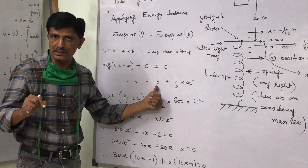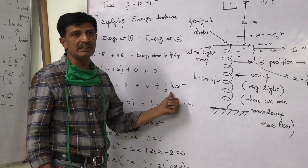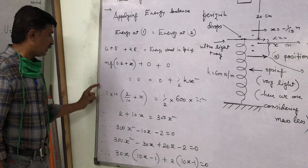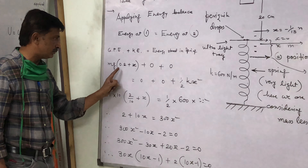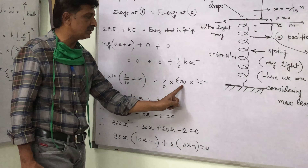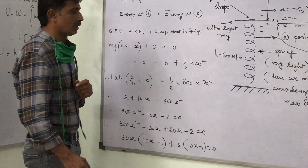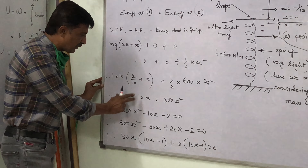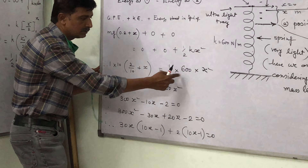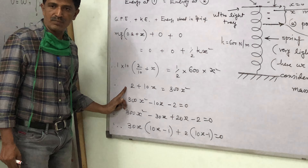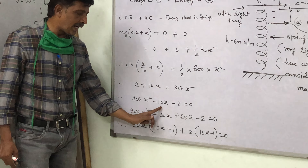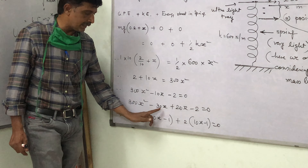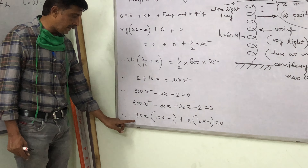At position 2, the block becomes momentarily stationary, so GPE of the block is 0 because this is the reference level. Kinetic energy is also 0 because it becomes momentarily stationary. And energy stored in spring is given by half kx². So: m × g × (0.2 + x) = half × k × x². With m = 1 kg, g = 10, k = 600: 1 × 10 × (0.2 + x) = 300x².